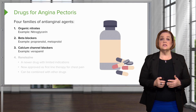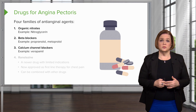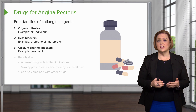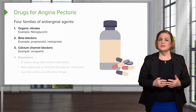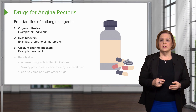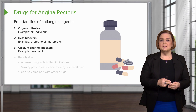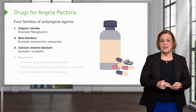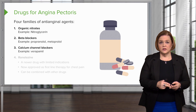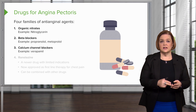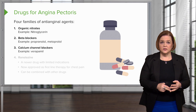Next is calcium channel blockers — one example is verapamil — which also helps us treat chest pain. So we've talked about the first three families: nitrates, beta blockers, and calcium channel blockers.